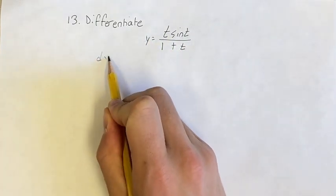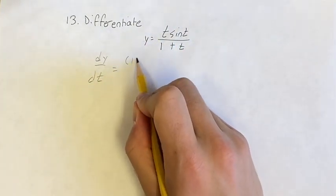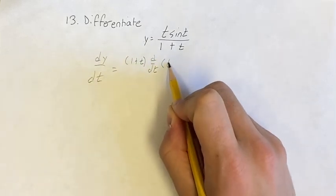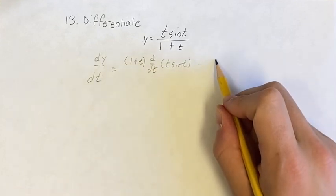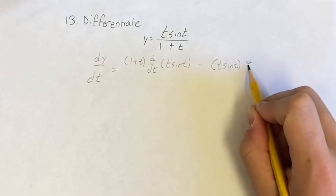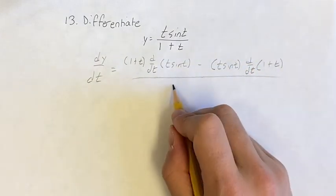So our derivative dy/dt is going to be, with this fraction, the denominator 1 plus t times the derivative of the numerator t sine t, minus the numerator t sine t times the derivative of the denominator, all over the denominator squared.